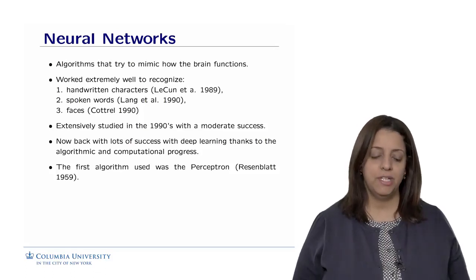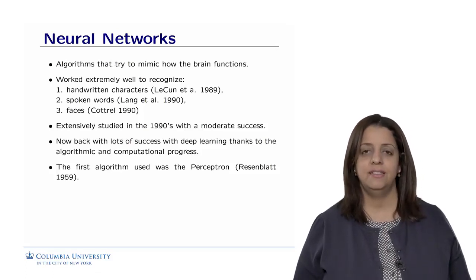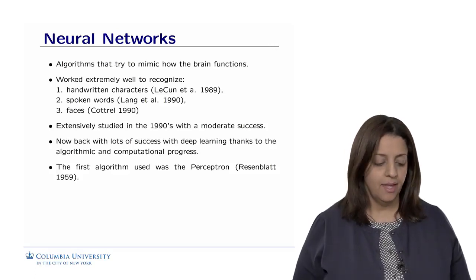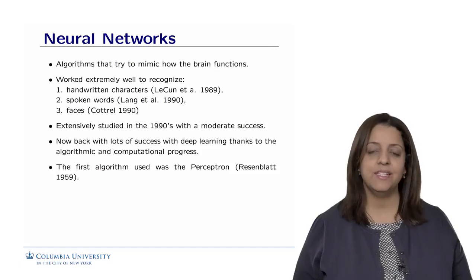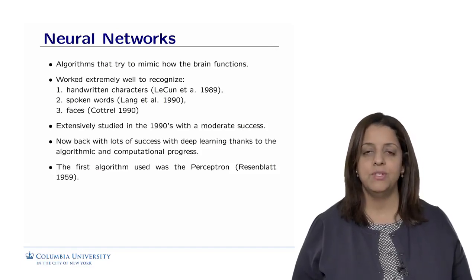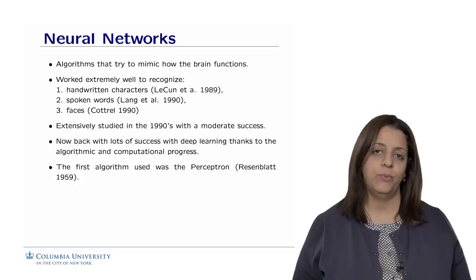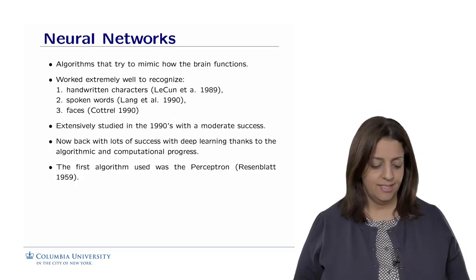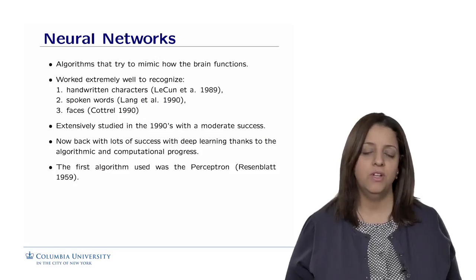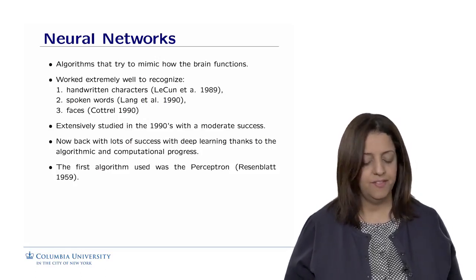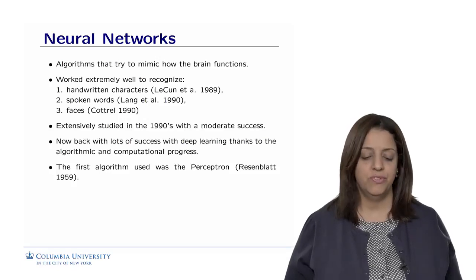It has been a topic of research that was extensively studied in the 80s and 90s, but had some modest success at the time. Now it's back with lots of successes in using deep learning, thanks to algorithmic and computational progress that we have been witnessing since the 90s. As you recall, the first algorithm, or the simplest neural network, is called the perceptron, invented by Rosenblatt in 1959.